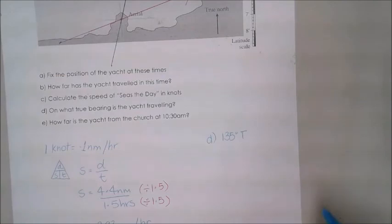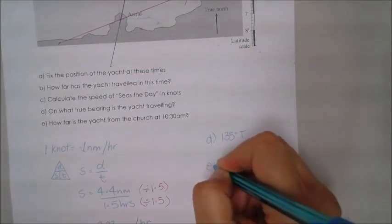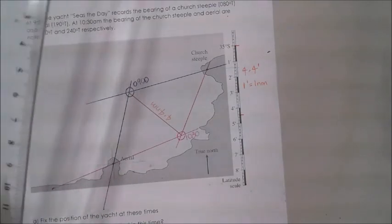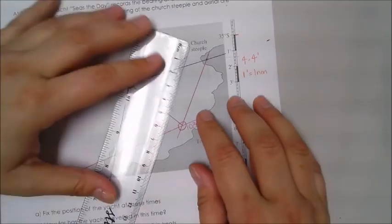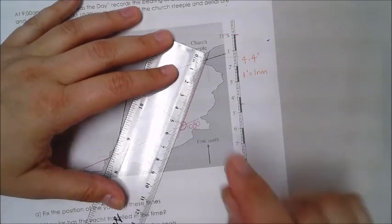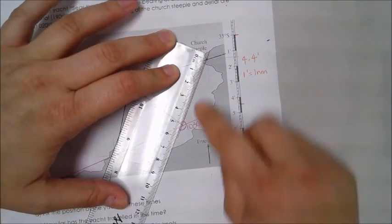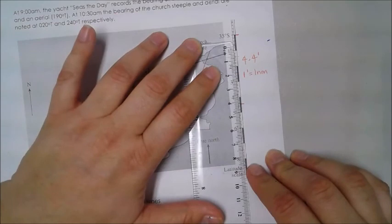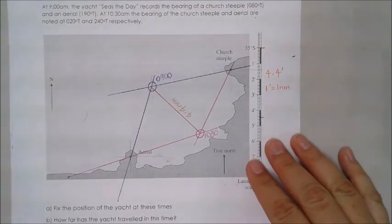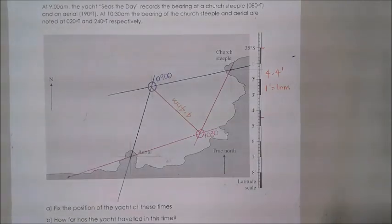Finally, part E. How far is the yacht from the church at 10:30? This is just another measurement type of question. But all we're going to do now, once again, just like you did before, and I'll leave you to finish this one off on your own. Measure the line, use your scale. That's my challenge for you at the end. And that is how we fix the position.